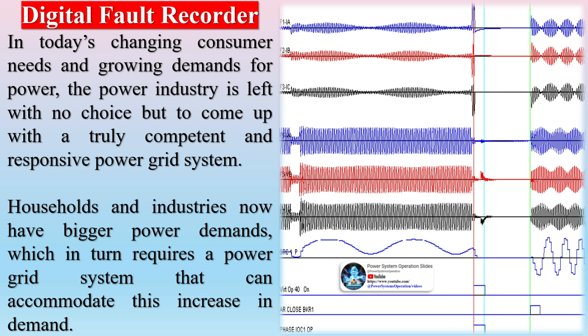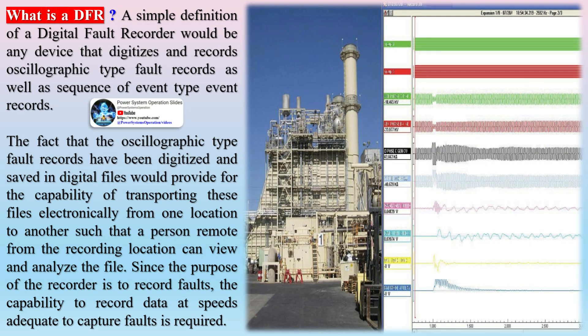What is a DFR? A simple definition of a digital fault recorder would be any device that digitizes and records oscillographic-type fault records as well as sequence of event-type event records. The fact that the oscillographic-type fault records have been digitized and saved in digital files provides for the capability of transporting these files electronically, such that a person remote from the recording location can view and analyze the file. Since the purpose of the recorder is to record faults, the capability to record data at speeds adequate to capture faults is required.